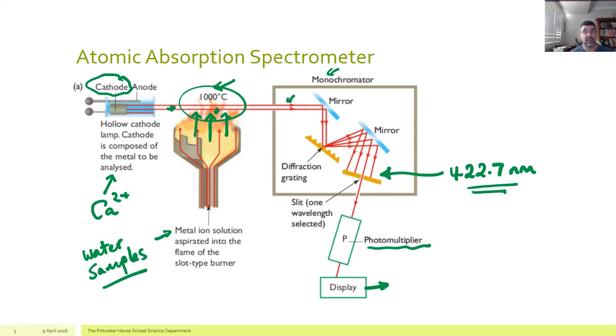What we find is that if the concentration of calcium ions is higher, then the amount of absorbance will change as a consequence of that higher concentration. And in fact, the relationship is a linear one.